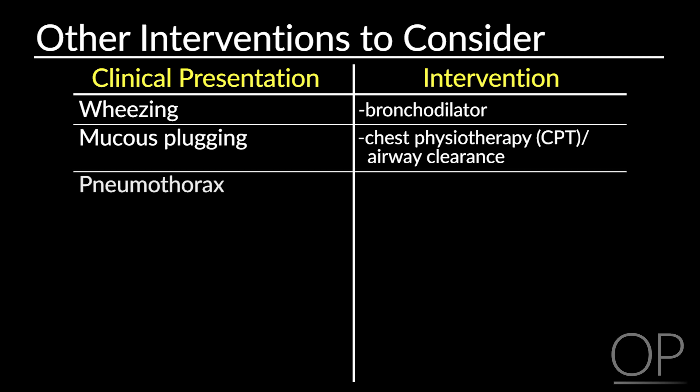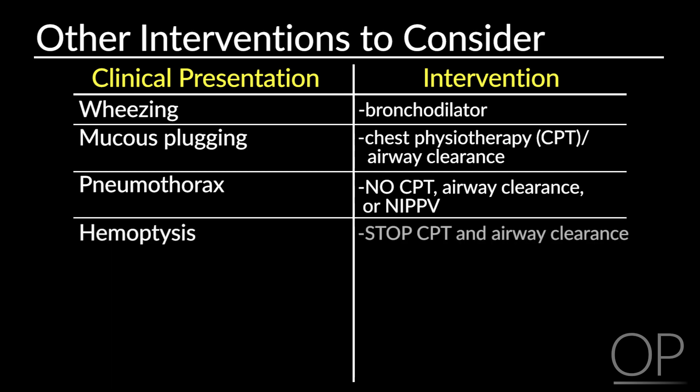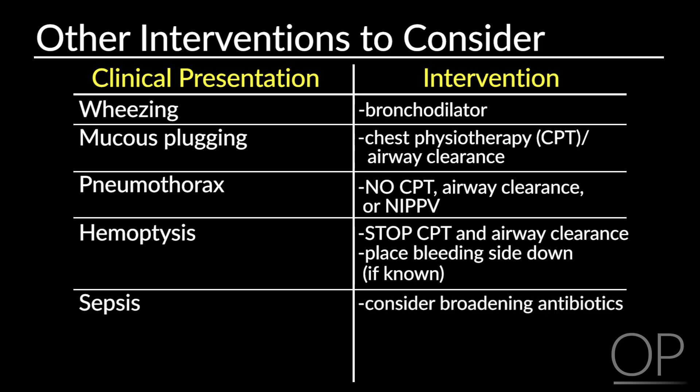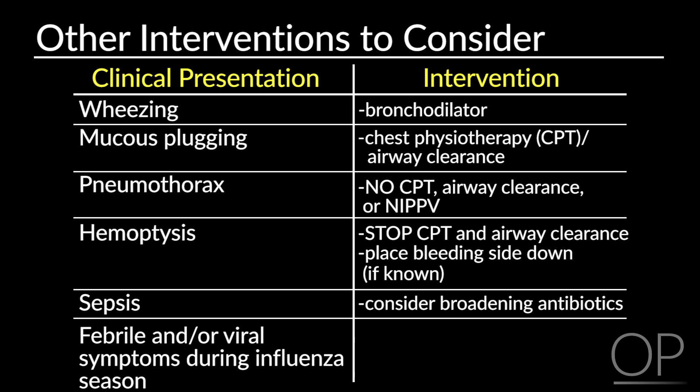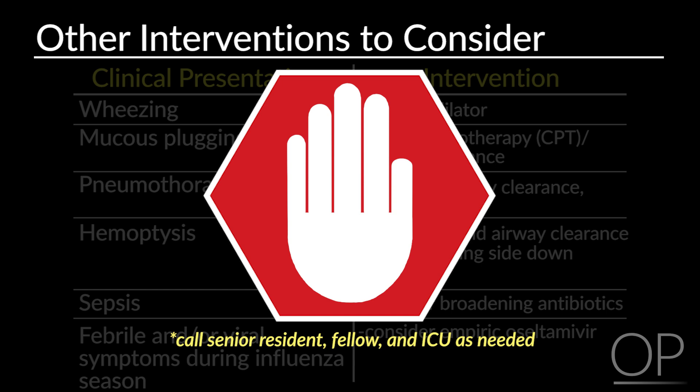If you are concerned about a pneumothorax, make sure to hold all chest PT and airway clearance as well as non-invasive positive pressure ventilation such as BiPAP. If the patient has hemoptysis, stop chest PT and airway clearance and place the bleeding side down if known. Please refer to the hemoptysis video for further information on this. If concerned for sepsis, consider broadening your antibiotics. If the patient is febrile or has viral symptoms and it is flu season, consider empiric use of Tamiflu. Also remember to call your senior as well as your fellow and or the ICU as needed.